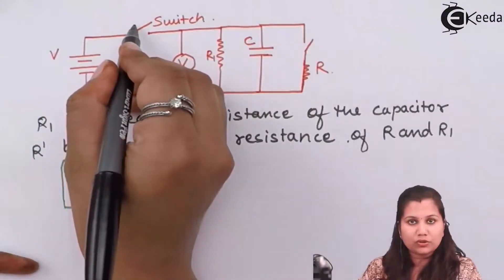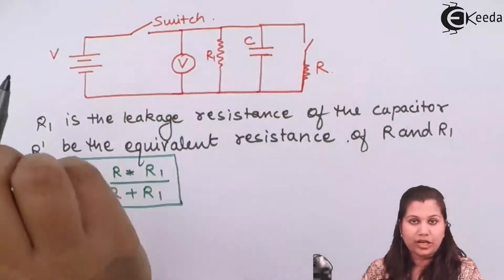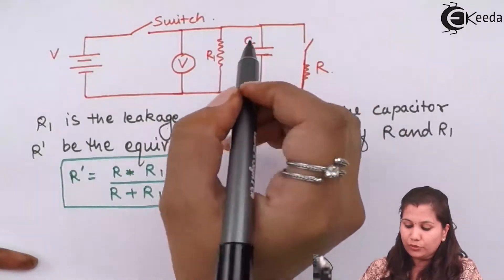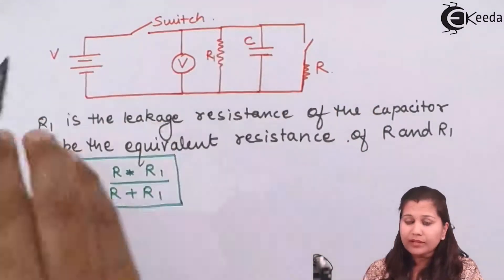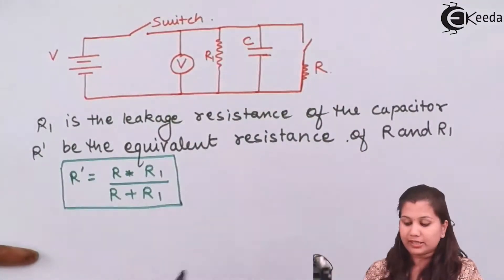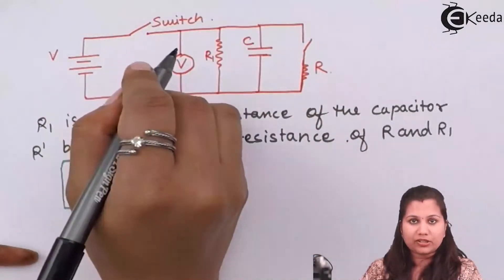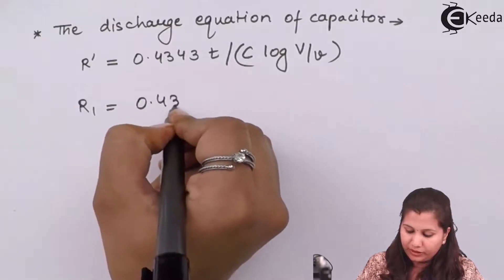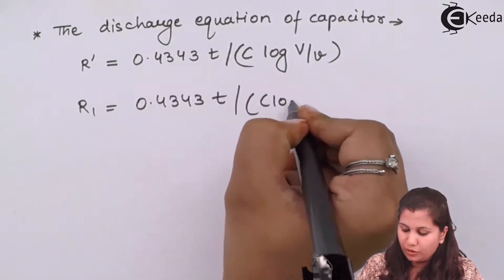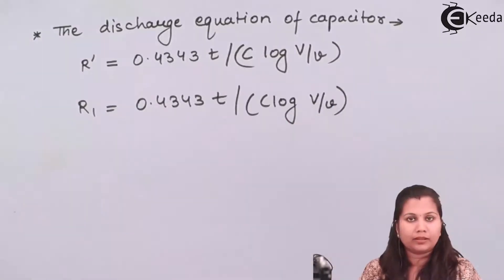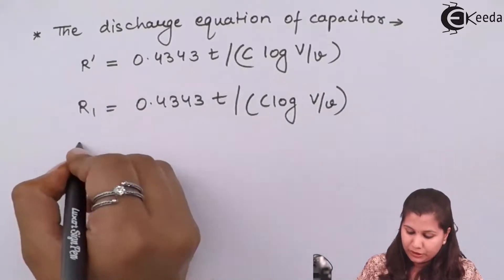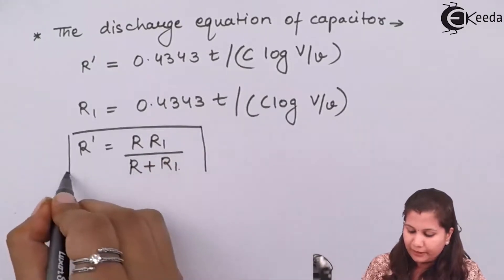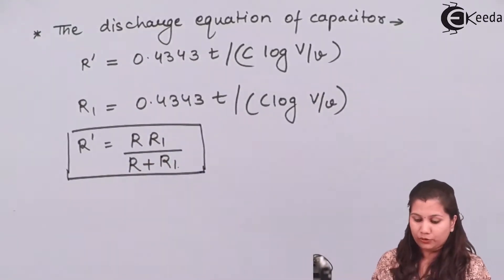In the second case, both switches are open and the capacitor discharges through the leakage resistance R1 only. The discharge equation changes to: R1 equals 0.4343 T divided by C times log base 10 of capital V by small v. From these two equations together with R' equals R times R1 divided by R plus R1, we can obtain the value of the leakage resistance of the capacitor and the unknown resistance.